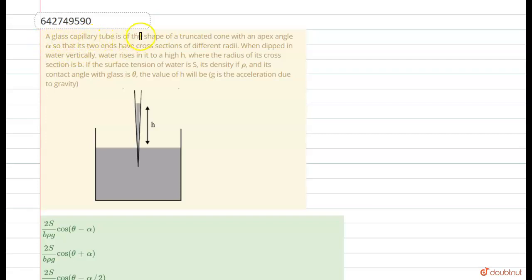A glass capillary tube is of the shape of a truncated cone with an apex angle alpha, so that its two ends have cross sections of different radii.